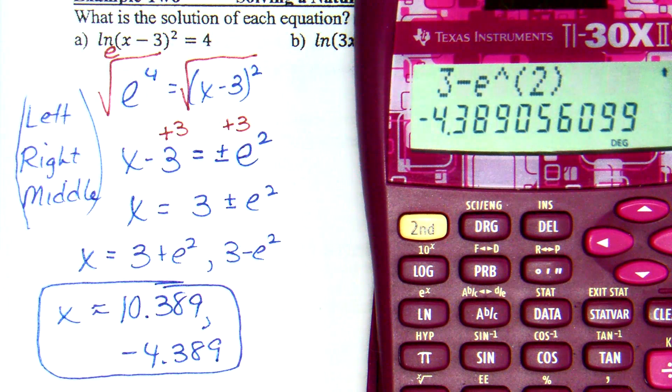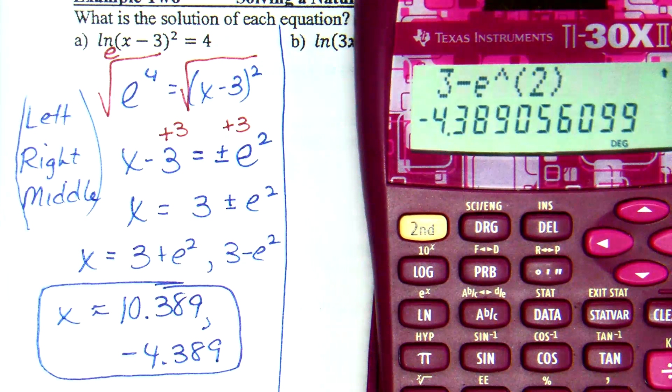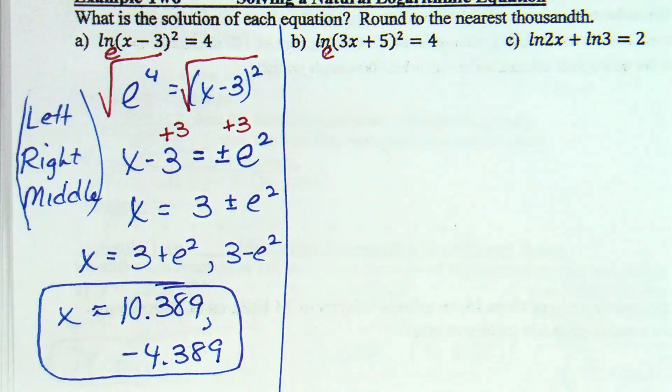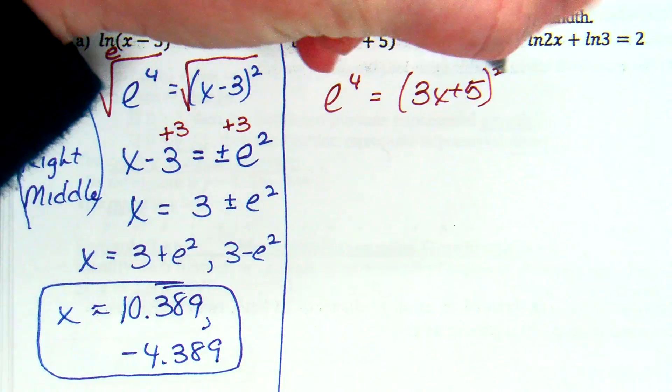Feel free. Did everyone get their calculator to cooperate? Yes. Because that is half the battle here. I'm just really serious. I'm just trying to make the 3 instead of my, and I'm like it's squared. Okay, B. Natural log of 3x plus 5 squared equals 4. Okay, so we're going to start with the left right middle. Knowing that this is base E. Okay, left right middle says what? It's going to be E to the 4th equals 3x plus 5 squared.